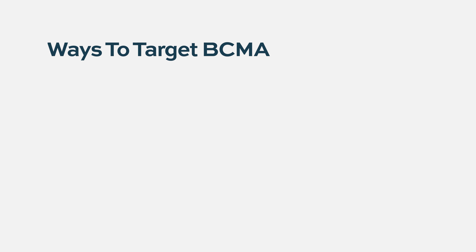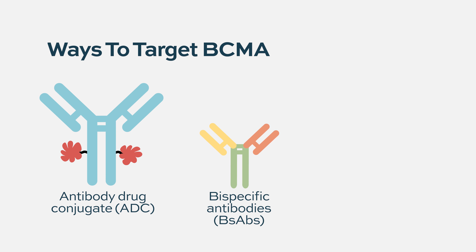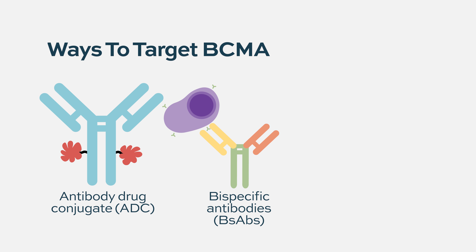There are lots of ways to target BCMA. You can make an antibody with a chemotherapy target attached to it, or you can make what's called a bispecific antibody, where one part binds to the target and another part binds the patient's own immune system, bringing those two things together.